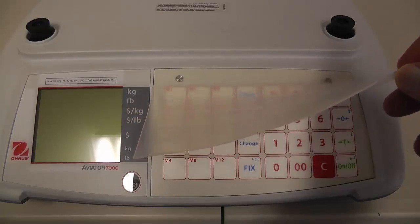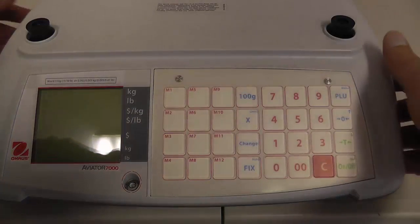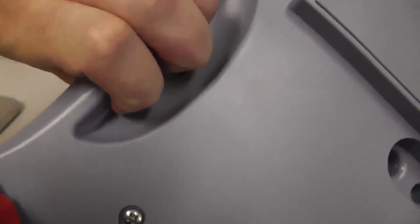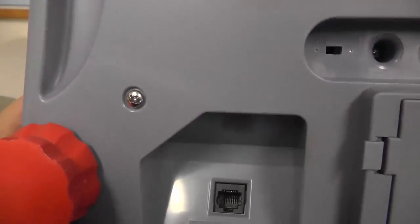The scale has what they call ergo grips on the side, which helps you have something to hold on to when you're carrying it. The opportunity to have battery power is kind of unique on this scale because it can be powered by either rechargeable batteries or regular alkaline D cell batteries, just at the flip of a switch.